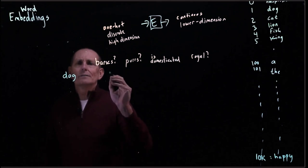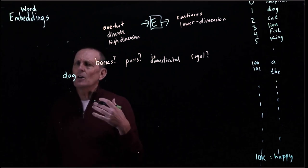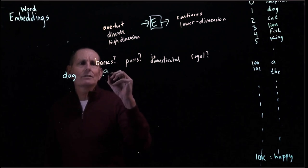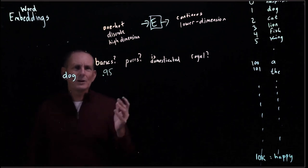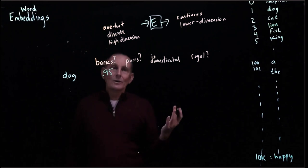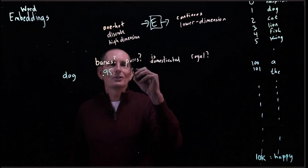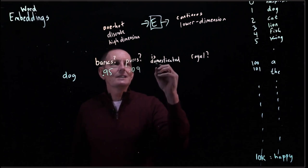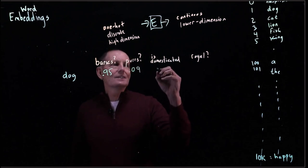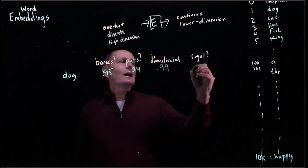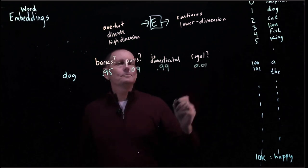So dogs, do they bark? Well yes, 100%? No, not all dogs bark. Let's maybe make it a 0.95. Purrs? I did have a golden retriever that kind of purred a little bit. So maybe we'll make this a 0.09. Is domesticated? Yes, almost completely dogs are domesticated. Royal? Not really, 0.01.